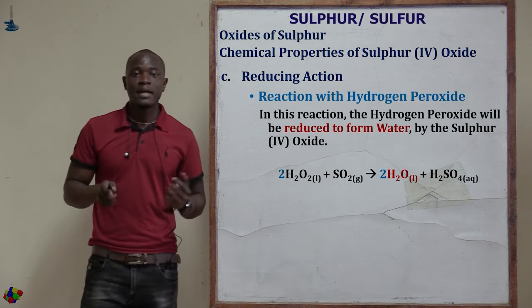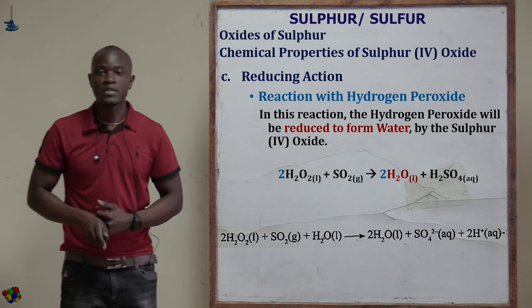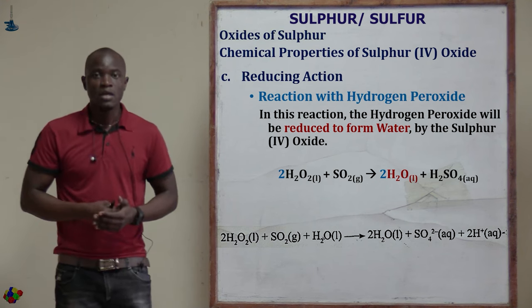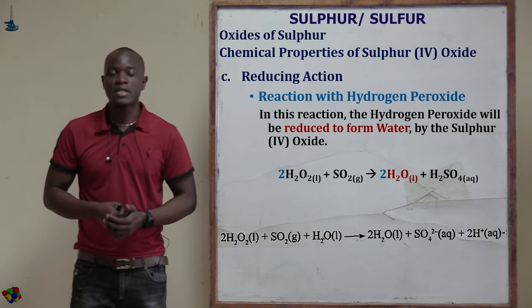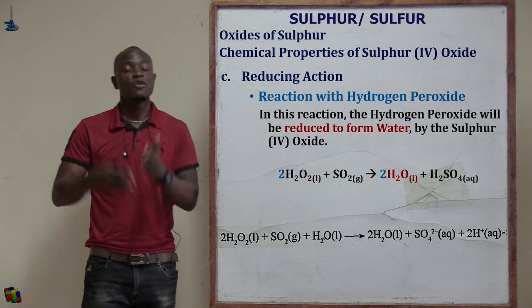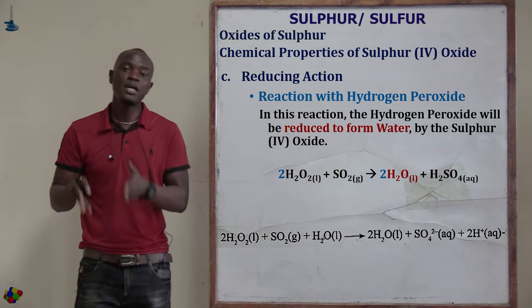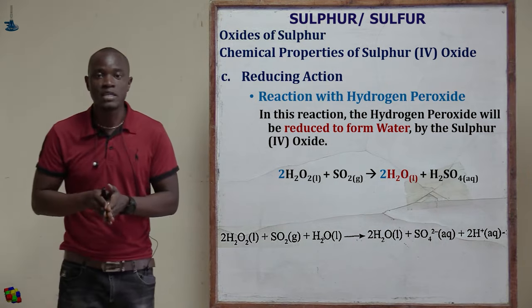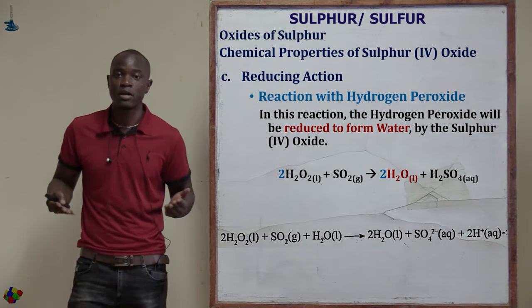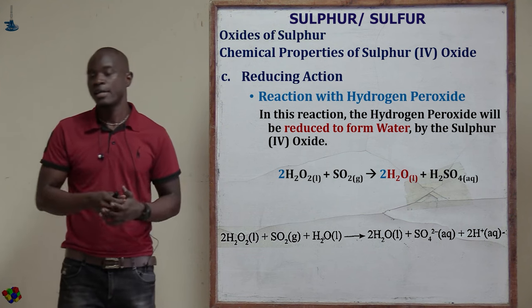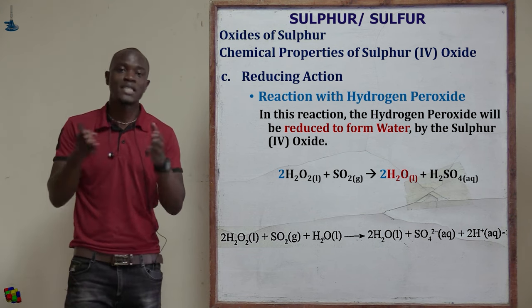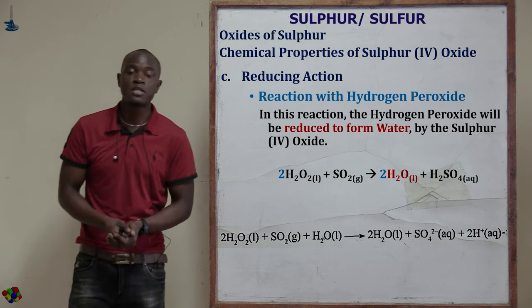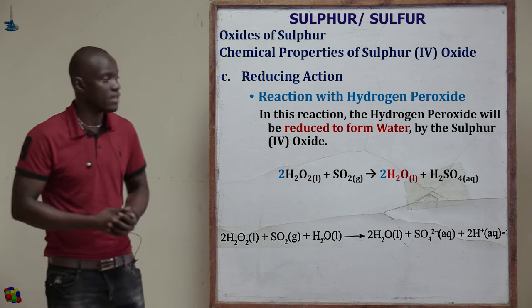The last reducing property is reaction with hydrogen peroxide. When sulfur(IV) oxide is bubbled through hydrogen peroxide, it reduces the hydrogen peroxide to water molecules. Meanwhile, the sulfur(IV) oxide is oxidized to sulfate ions. That is what happens as far as the reducing properties of sulfur(IV) oxide are concerned.